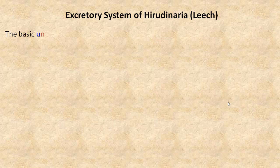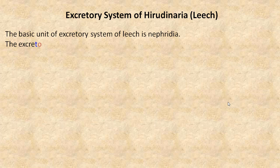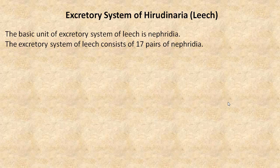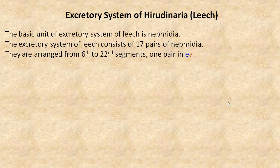The basic unit of the excretory system of Leech is Nephridia. The excretory system of Leech consists of 17 pairs of Nephridia. They are arranged from the 6th to 22nd segments, one pair in each segment.